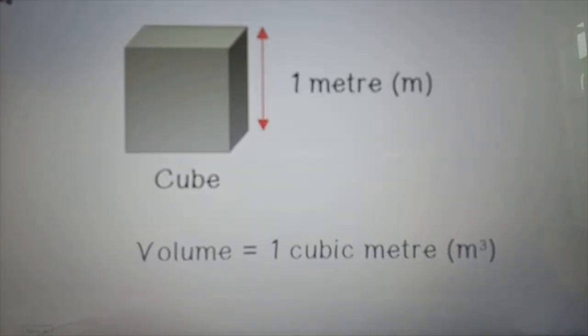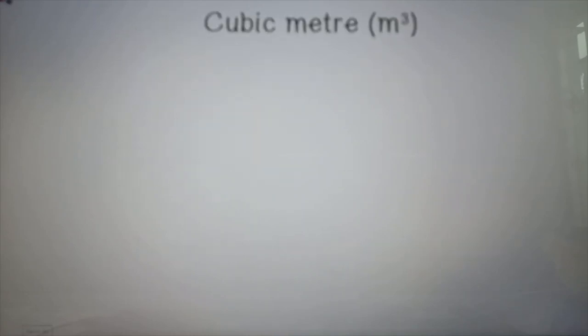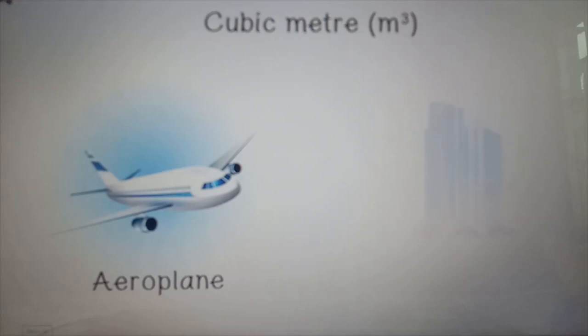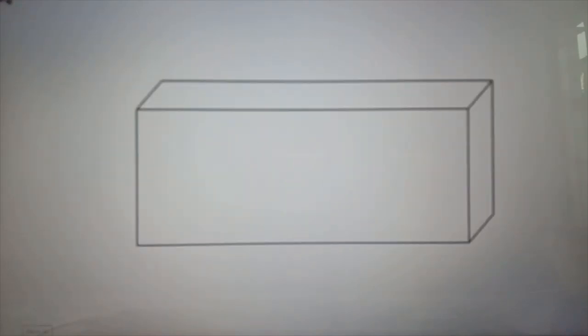A cube with size of 1 meter has a volume of 1 cubic meter. Examples of objects measured in cubic meters are airplanes and buildings.